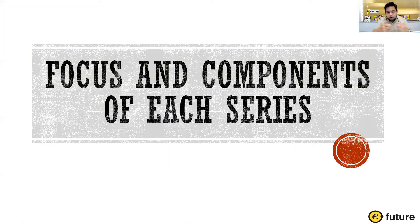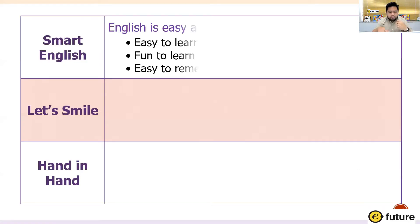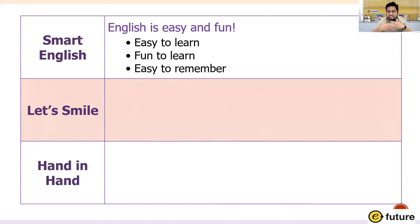Going over the features of each series — the components and what they focus on. Smart English is easy to learn and easy to remember. With our first coursebook, we tried to make it as simple and easy as possible, not only for the students to learn, but also for the teachers to teach. We tried to make learning and teaching English easy. That was our main focus.